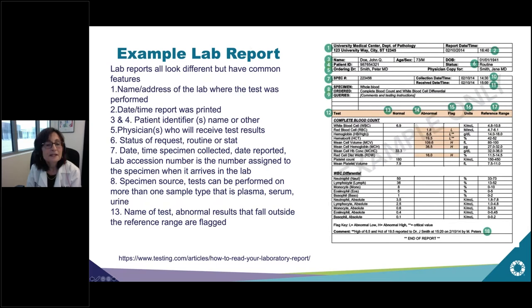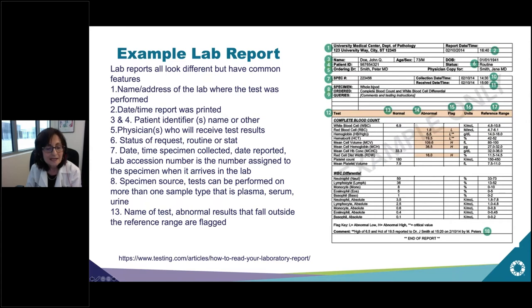The source of the specimen will be listed — for example, tests can be performed on more than one sample type such as plasma, serum, or urine; this one says whole blood. Then the name of the test and any abnormal results that fall outside the reference range are shown. Here's a complete blood count, and you can see these results are flagged as abnormal.